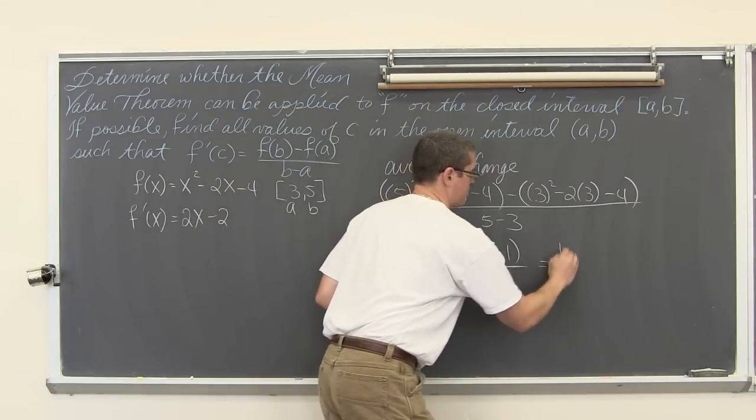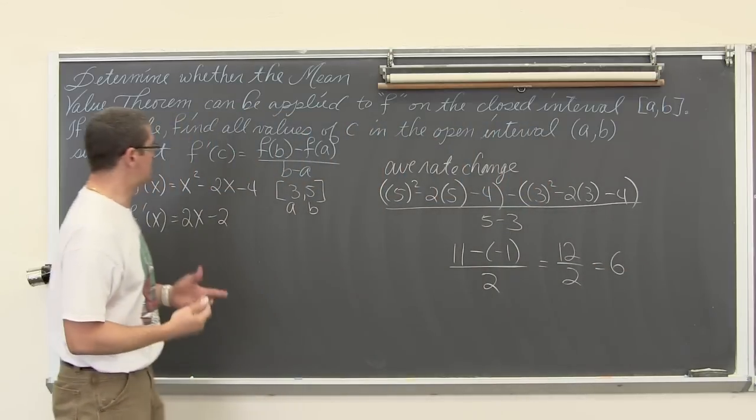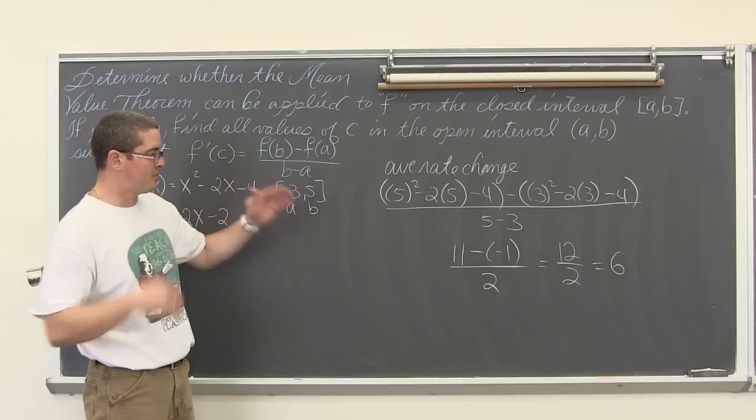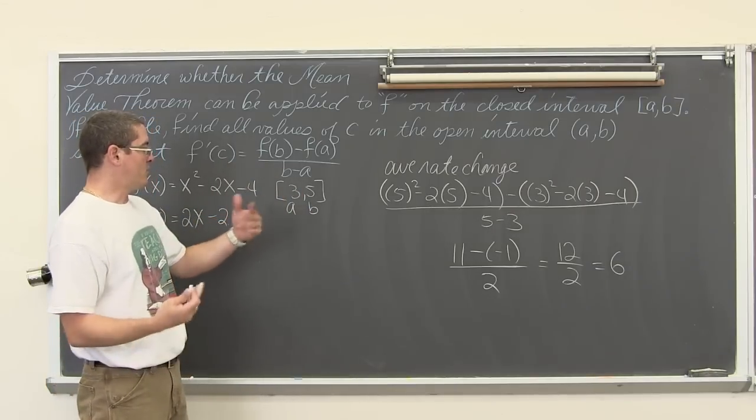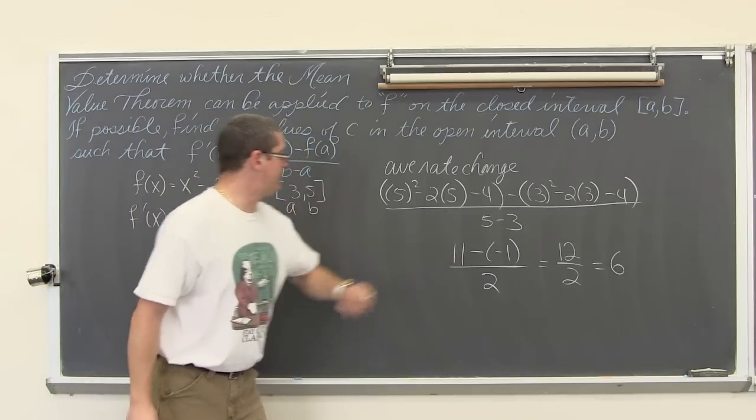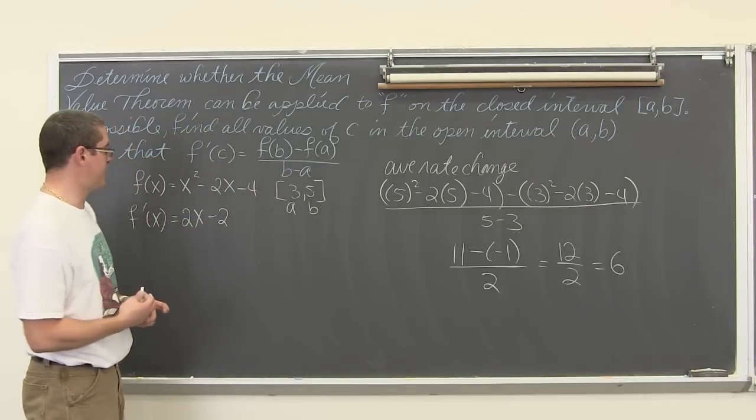5 - 3 which is 2. And -11. So the average rate of change, the slope of the secant line going through the a value, going through 3 or 5,11 and 3,-1, that slope of that secant line is equal to 6.